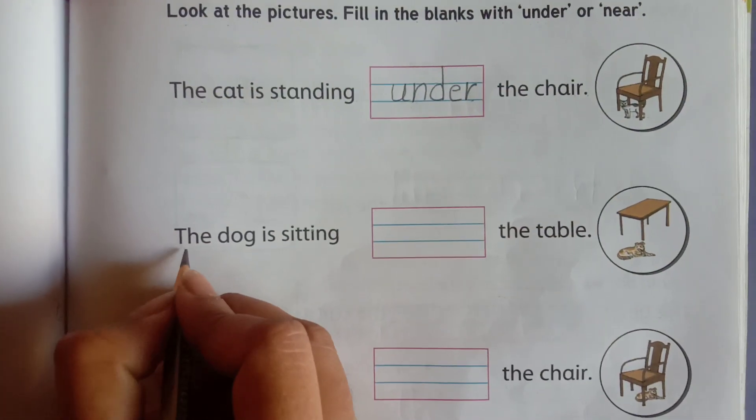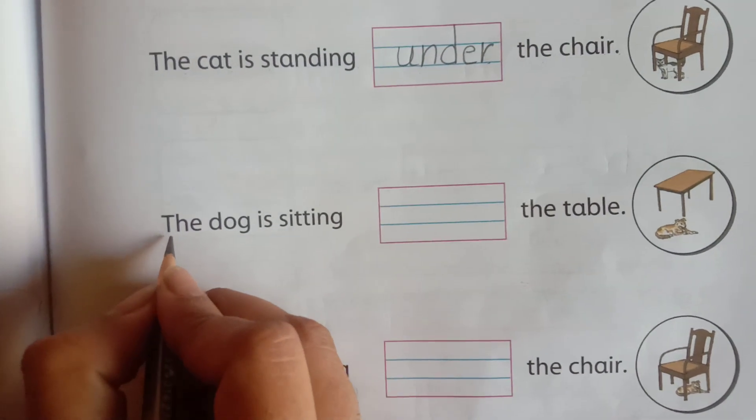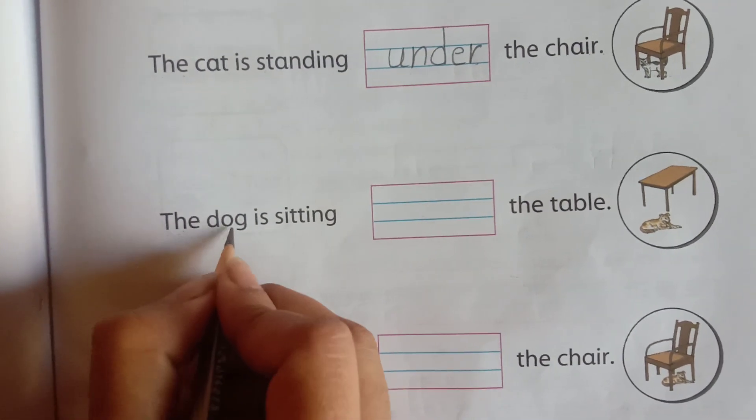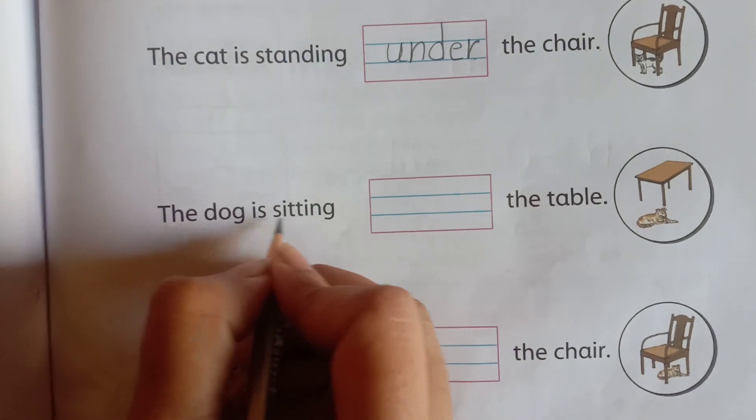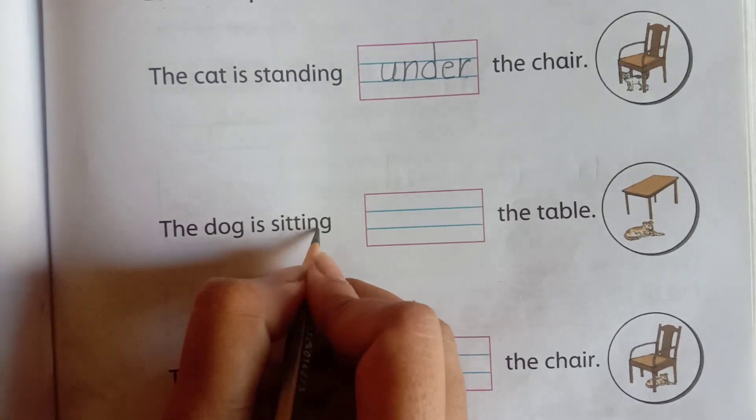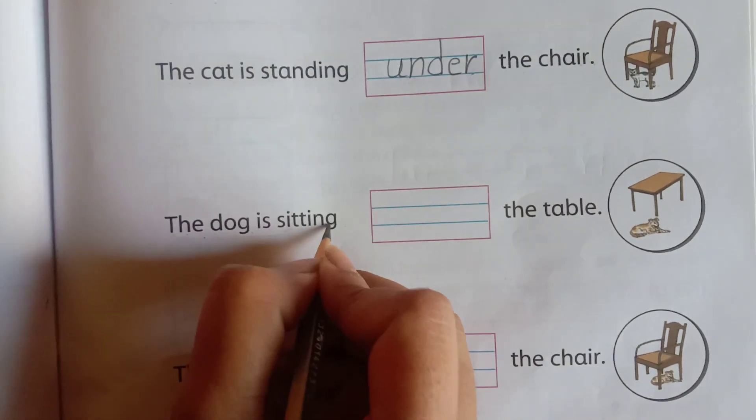Under preposition. Next one, you can see. The dog, dog. The dog is sitting. The dog is sitting. Fill in the blanks. The table, table. The dog is sitting.